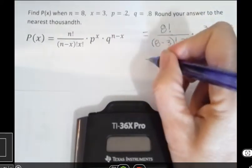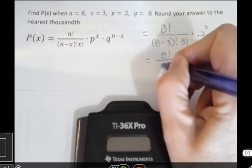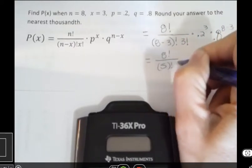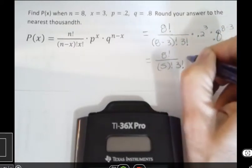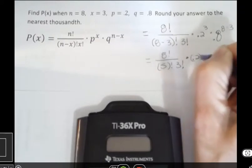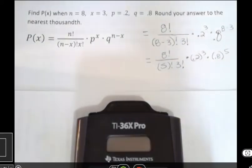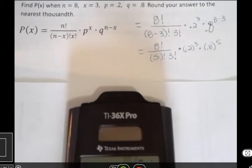So looking at that we have 8 factorial, 8 minus 3 is 5 factorial, 3 factorial, times 0.2 to the third times 0.8 to the fifth. That's probably going to be the easiest way for me to enter that into my calculator.